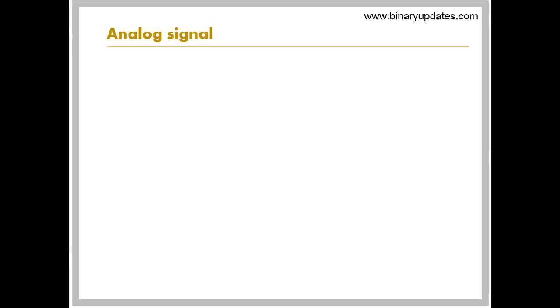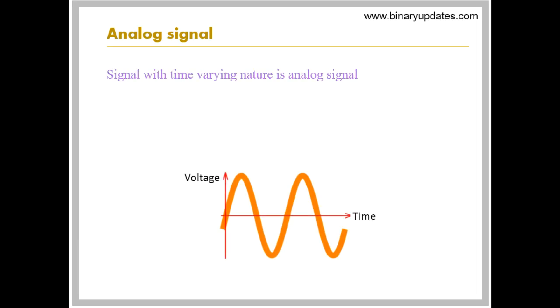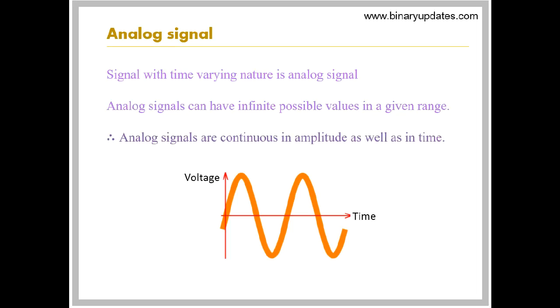Signal with time varying nature is analog signal. This can be graphically shown with example a voltage signal, where x-axis represents time and y-axis voltage. Analog signals can have infinite possible values in a given range. Hence they are continuous in amplitude as well as in time.